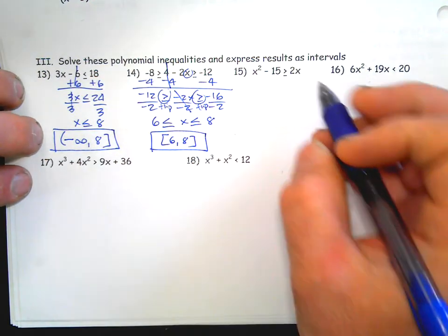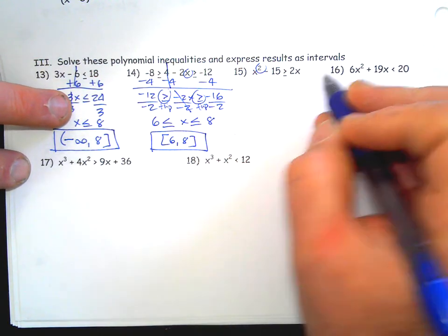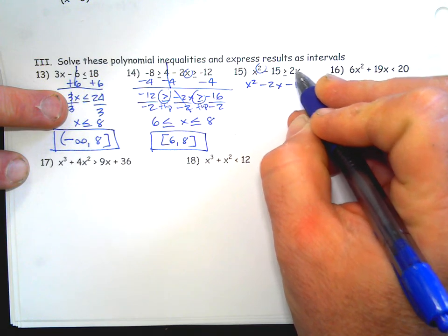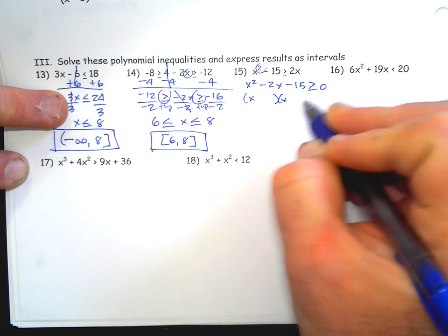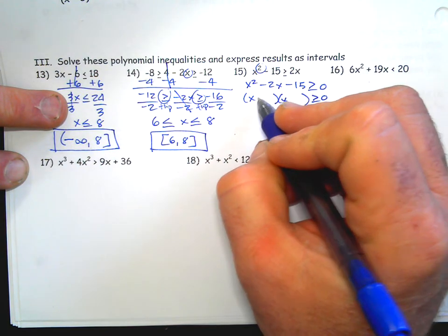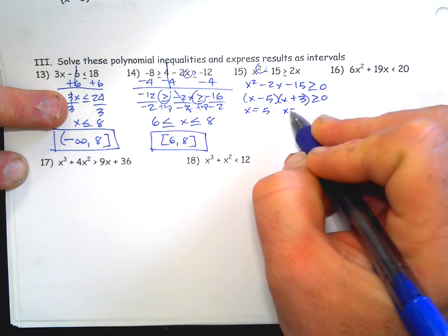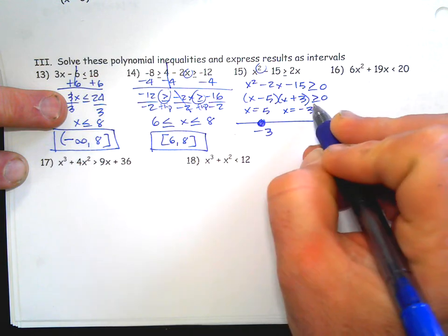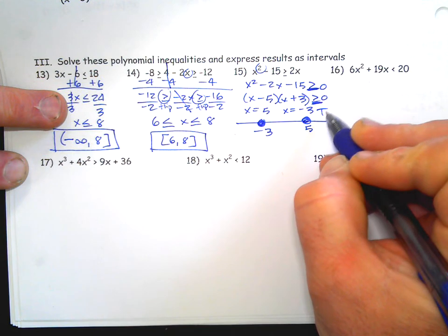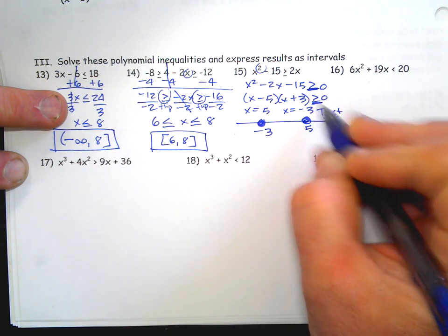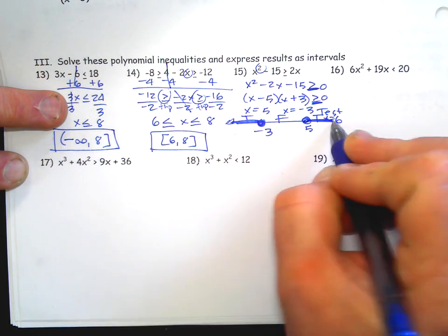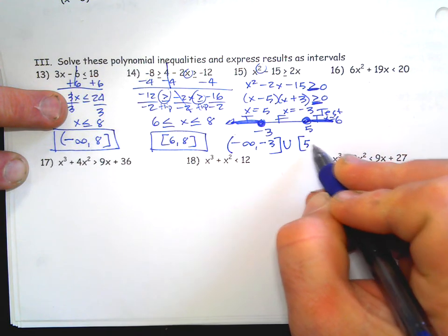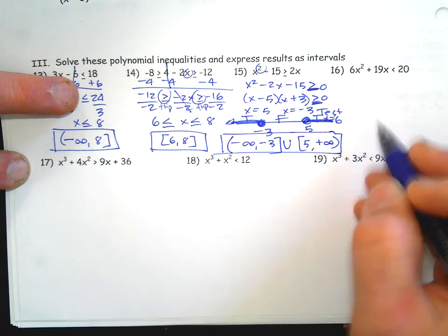Interval notation is a convenient, quick way to write answers. For a polynomial inequality, I would not suggest taking square roots of both sides or anything like that. Move everything to one side first using algebra — subtract 2x from both sides to get it to zero. Factor it; if you can't, use the quadratic formula. Find the roots: negative five and positive three work. No even powers, so put open or closed dots on the number line — solid dots because it has 'or equal to'. Test x equals six: it's positive, so false, true, false. Answer: negative infinity to negative three with a bracket, union five to positive infinity.